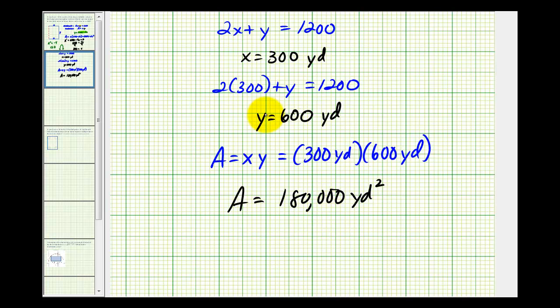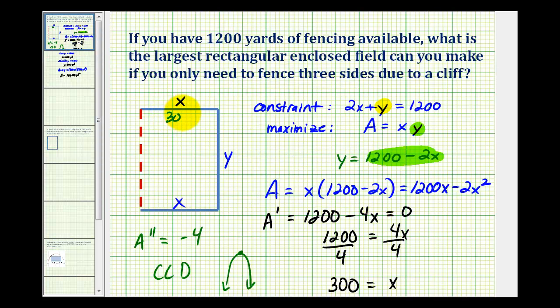Let's go back and label our sketch. This was 300 yards, and so is this, and y was 600 yards, and our area was 180,000 square yards.